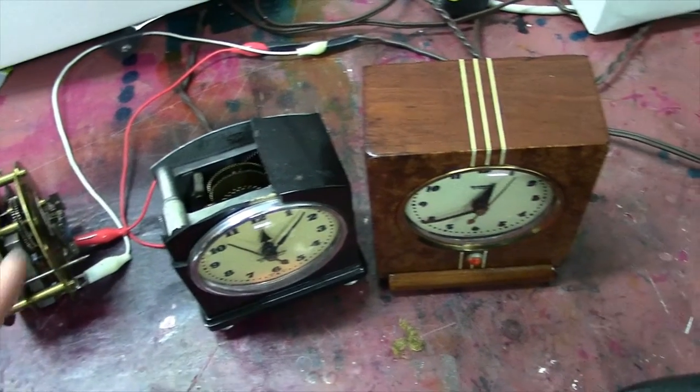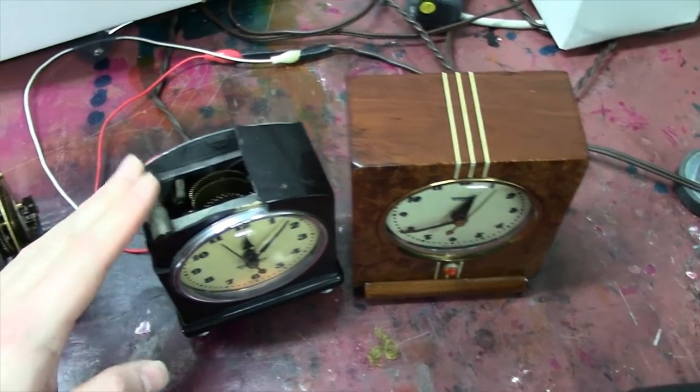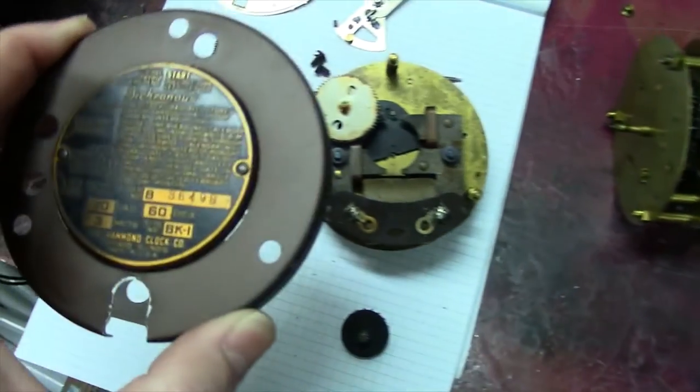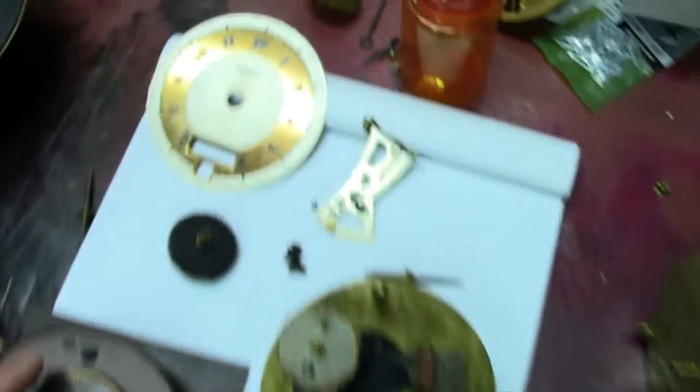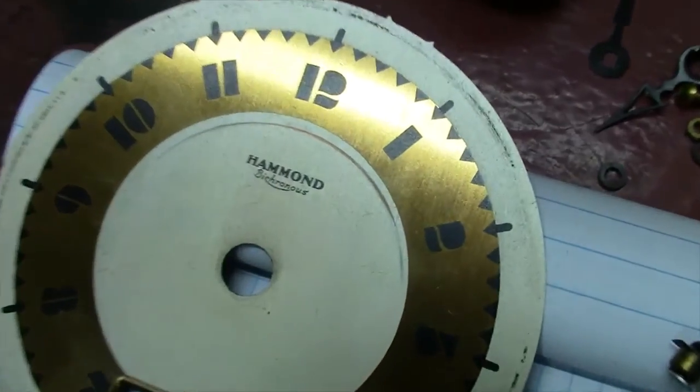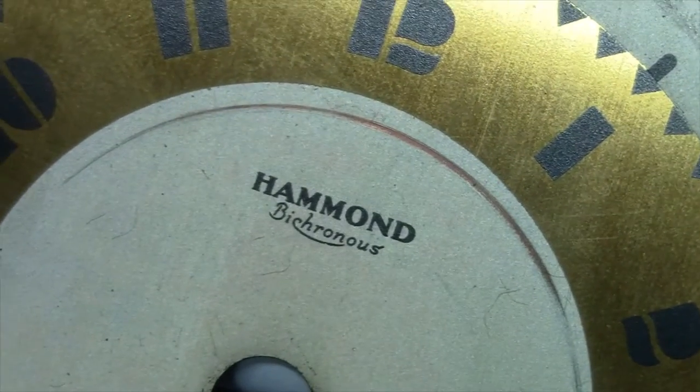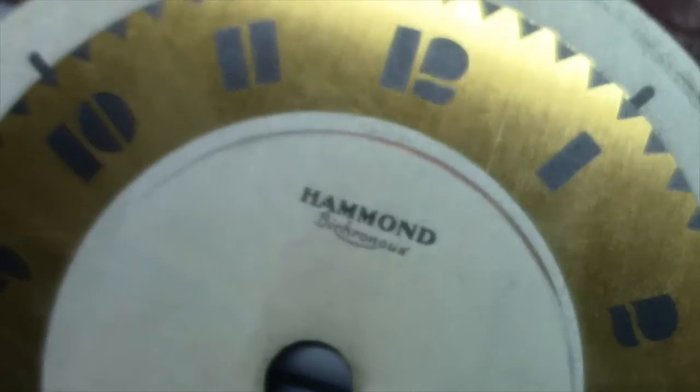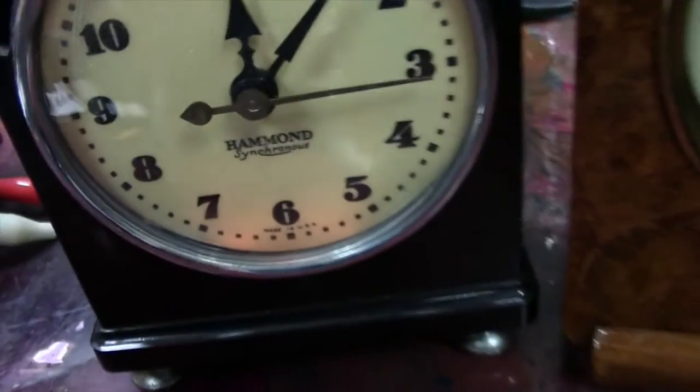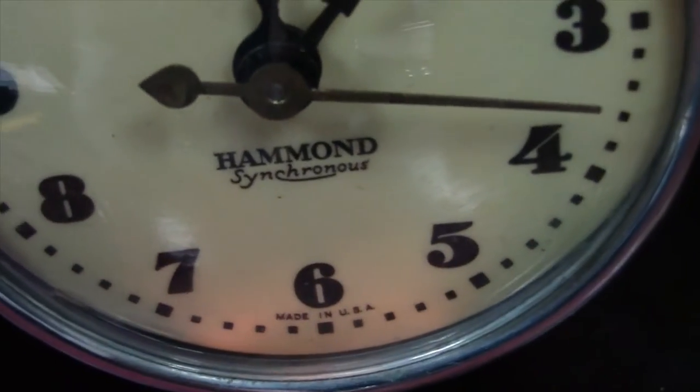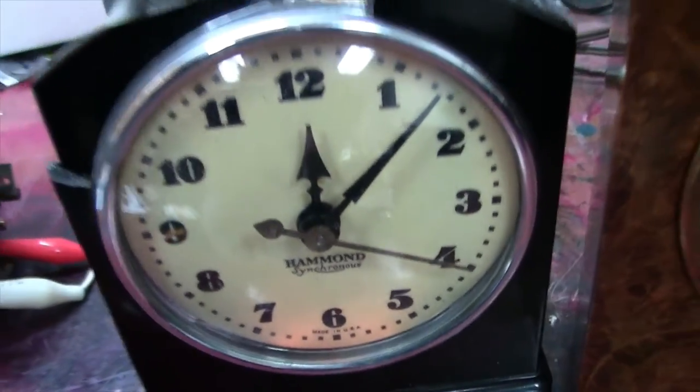But in my research of the synchronous clock, I found out there's another model of the Hammond clock, called the Bicronius clock, which you can see by the nameplate here on the back cover, as well as on the plate, the clock face. You can see it says Bicronius, where the others just say Synchronous. So that's a way of identifying them.